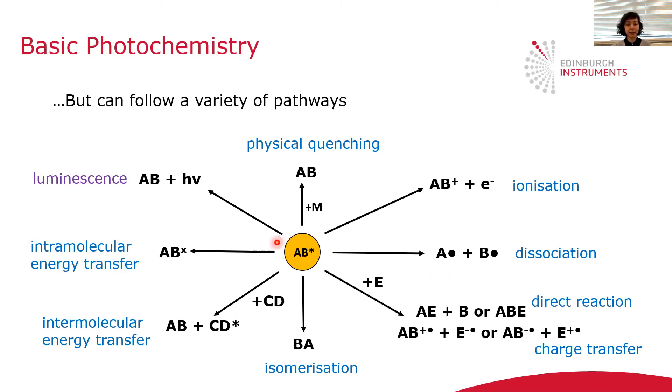But from this excited molecule, it can proceed through many different pathways. The photoexcited molecule AB can relax emitting radiation, or it can also relax through a non-emissive pathway, such as quenching. It can ionize, it can dissociate, it can react with other species. So there are many different types of processes that this excited molecule can undergo.